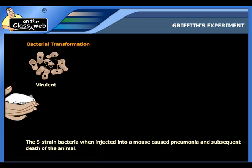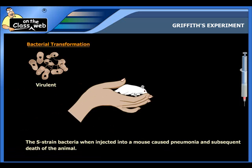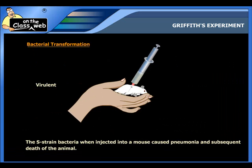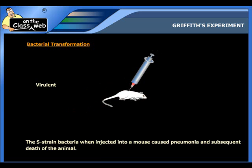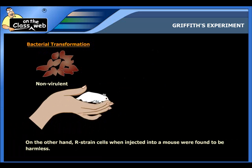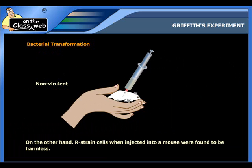First, he found that when the virulent S-strain bacteria were injected into a mouse, it caused pneumonia, which led to the subsequent death of the animal. On the other hand, when the non-virulent R-strain cells were injected into a mouse, the bacteria were found to be harmless.